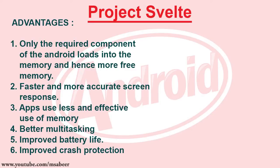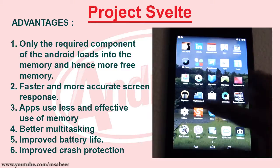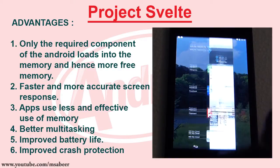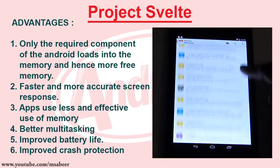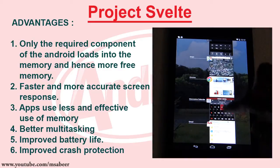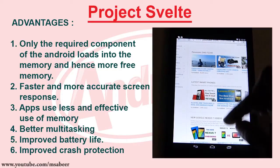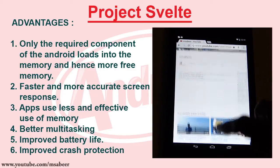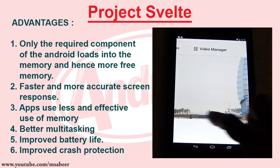The advantages of Project Svelte implementation include: only the required components of Android load into memory, giving applications more free memory space; faster and more accurate screen response; more effective memory usage by applications; better multitasking; and improved battery life and crash protection. Google has cut the extra fat accumulated during Project Butter, and Project Svelte has made KitKat a slender and elegant OS installable on a variety of low-end and futuristic Android devices.